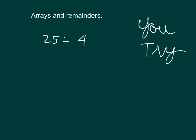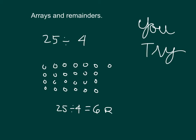Okay, it's your turn to try. Go ahead and use an array to solve 25 divided by 4. There is 4, 8, 12, 16, 20, 24, and there's 25. Okay, so 25 divided by 4 is equal to 1, 2, 3, 4, 5, 6, with the remainder of 1. The quotient is 6, and the remainder is 1.